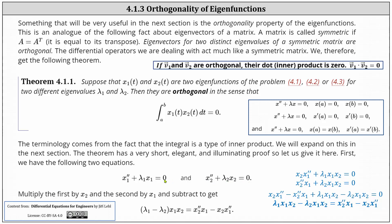We multiply the first equation by x2, shown in blue on the right, then multiply the second equation by x1, also shown on the right, and then we subtract. Subtracting the two equations gives us x2 x1 double prime minus x2 double prime x1, plus lambda 1 x1 x2 minus lambda 2 x1 x2, equals zero.